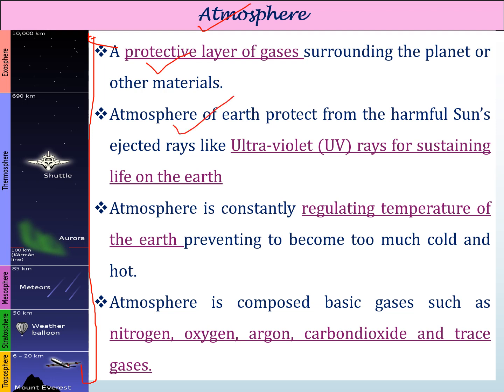The atmosphere of the earth protects us from harmful sun rays, such as ultraviolet rays, thereby sustaining life on earth. The ultraviolet rays coming from the sun would affect organisms living on earth, but due to the protective layer of the atmosphere, it reflects, absorbs, or transmits them so that life can be sustained. The atmosphere is also constantly regulating the temperature of the earth, preventing it from becoming too cold or too hot.